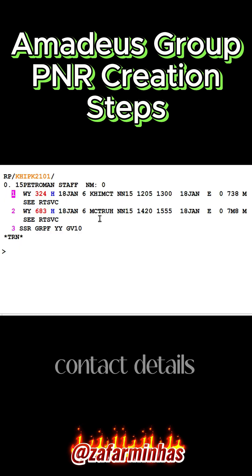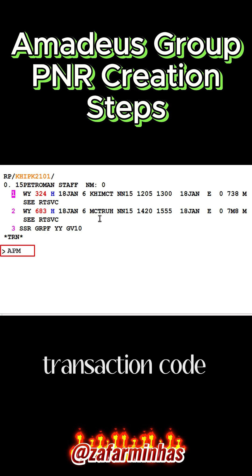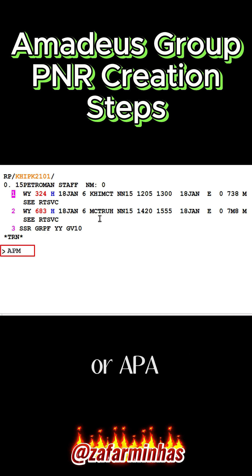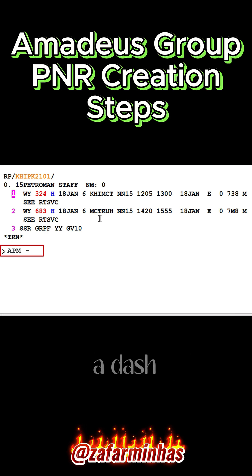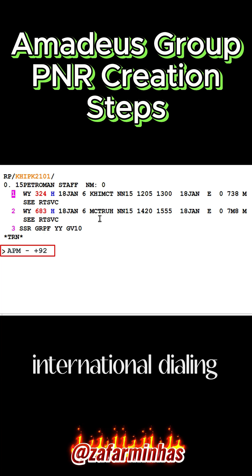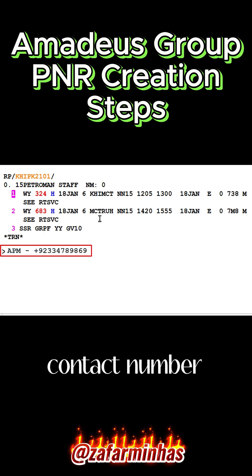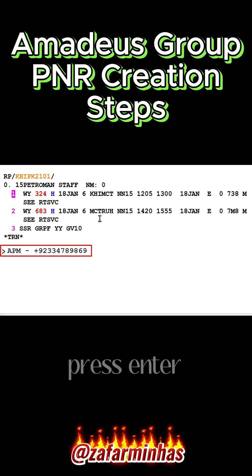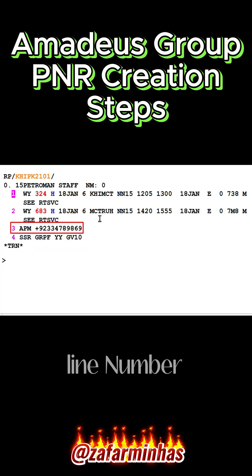Step 4: Contact details. To update contact details, use the transaction code APM for mobile or APA for agency, followed by a dash, the plus sign, 92 (the international dialing code for Pakistan), and then the contact number. Finally, press Enter. The contact element is updated as line number 3.